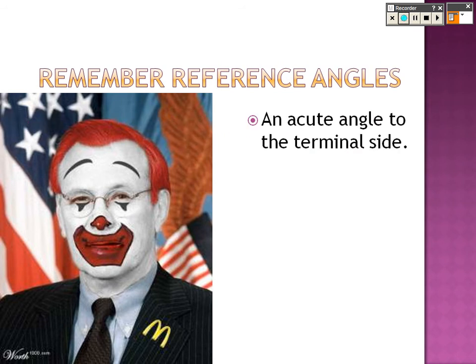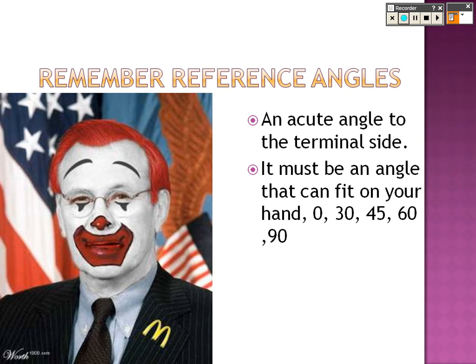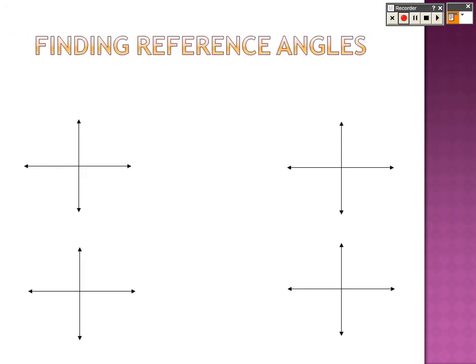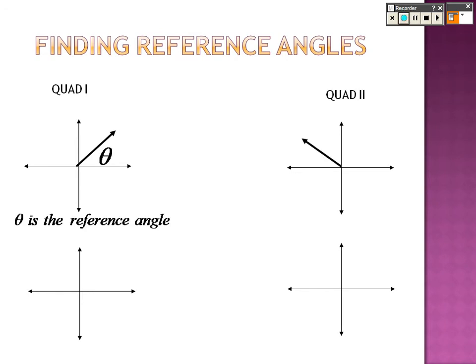Reference angles are acute angles to the terminal side. They must be angles that can fit on your hand: 0, 30, 45, 60, 90. Finding reference angles in quadrant 1 — it is what it is; if it's in quadrant 1, that is the reference angle. In quadrant 2, you do pi minus whatever that angle is, or 180 minus that if it's in degrees.